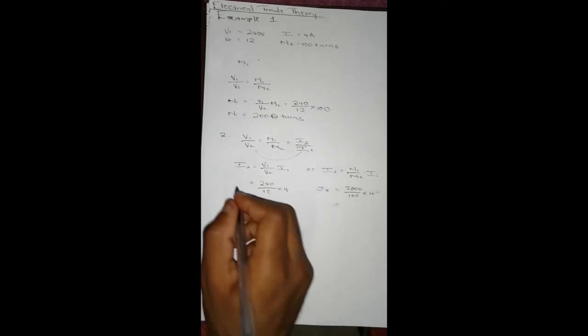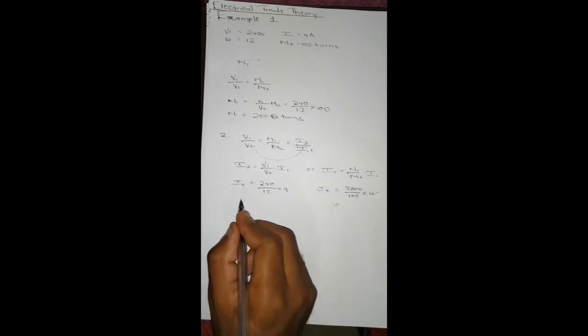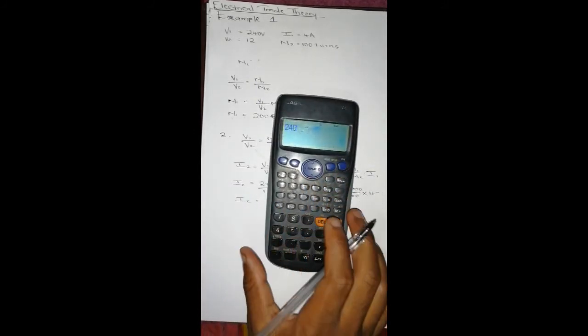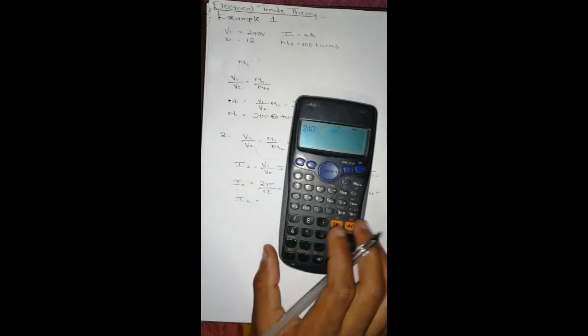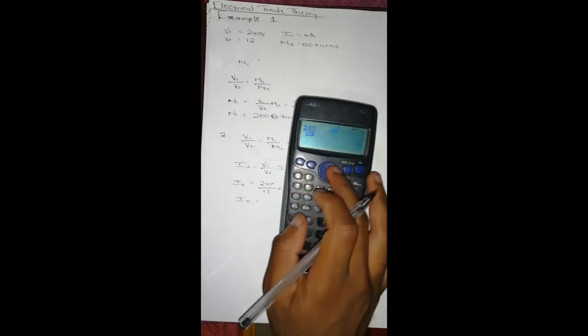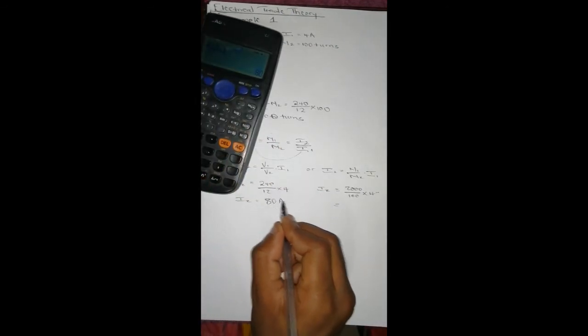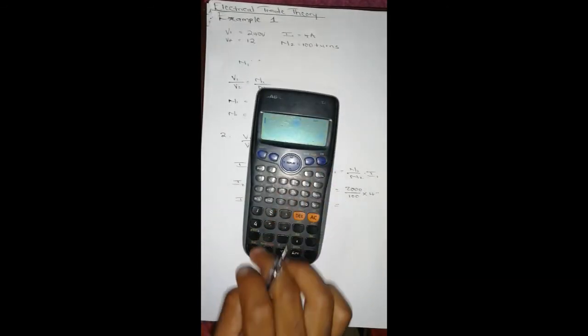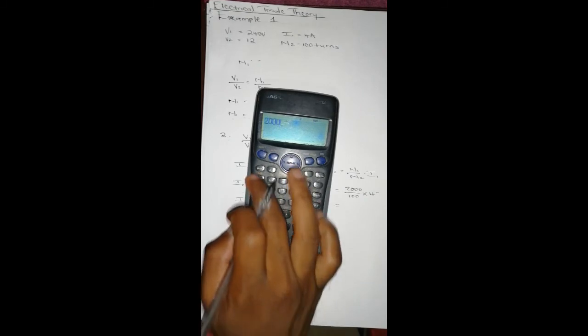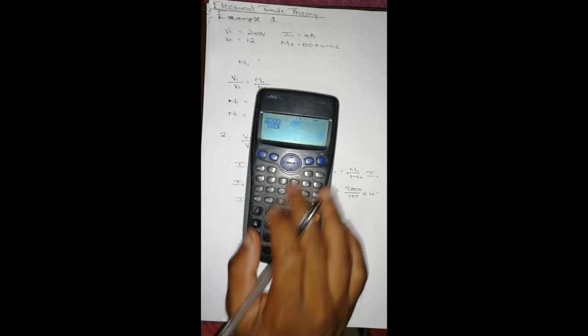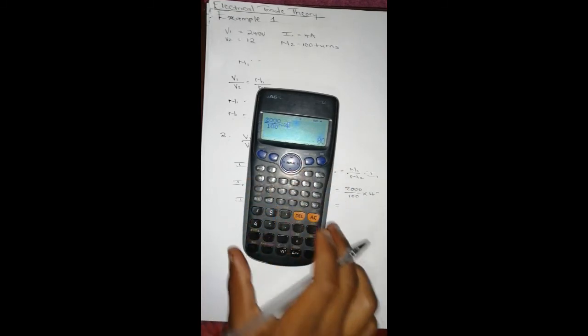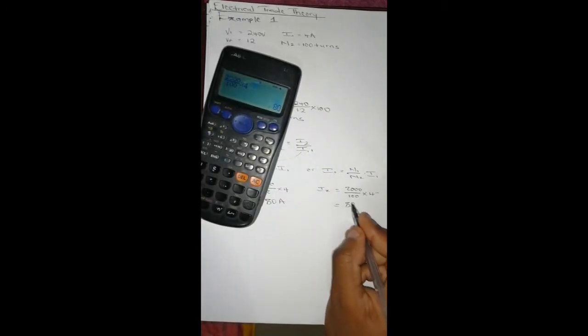Let's see what we get for I2. Punch the first one into the calculator: 240/12 × 4, it gives us 80 mA. The second one: 2000/100 × 4, it also gives us 80 mA.